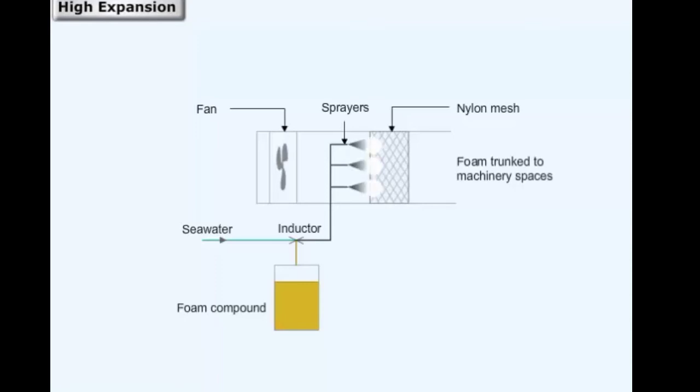A large fan provides sufficient air to form an air foam solution and drives it to the protected space through trunking. The foam generator discharges foam through fixed discharge outlets to fill the maximum space.